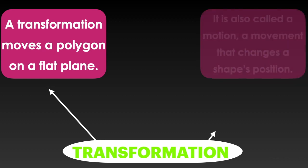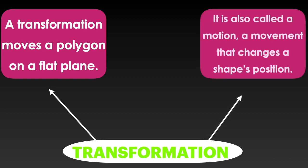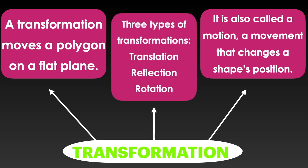A transformation moves a polygon on a flat plane. It is also called a motion — a movement that changes a shape's position. There are three types of transformations: translation, reflection, and rotation.